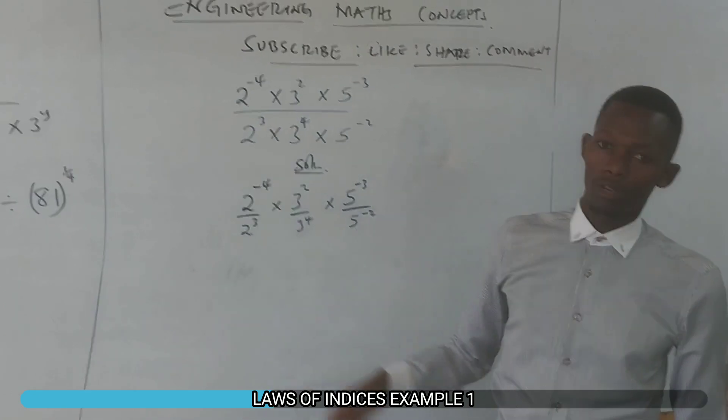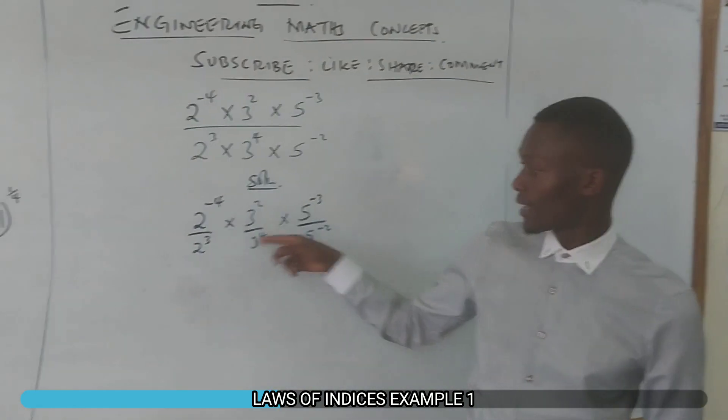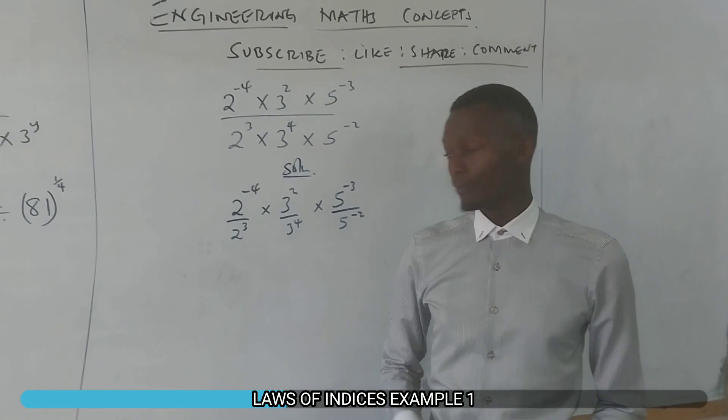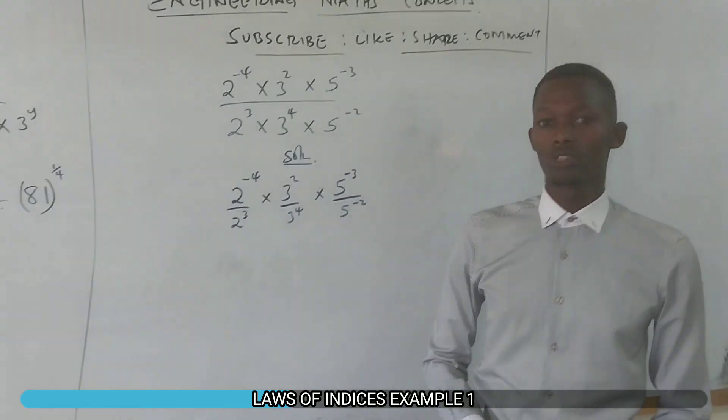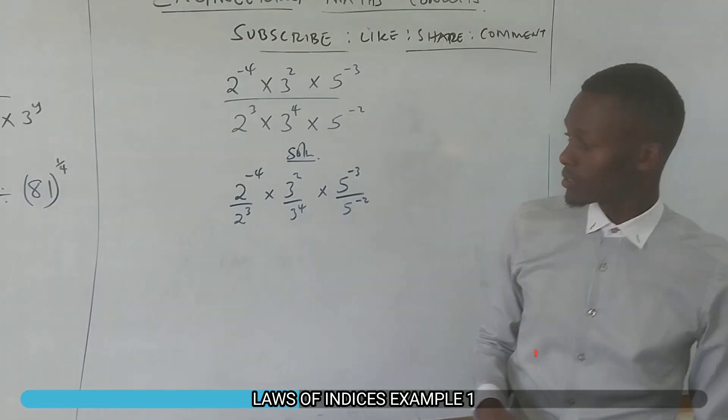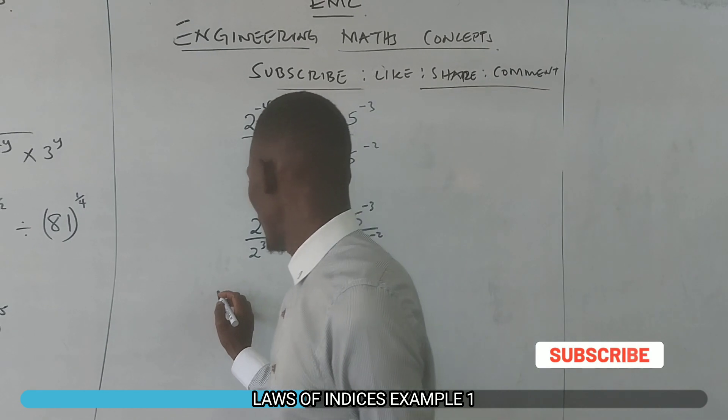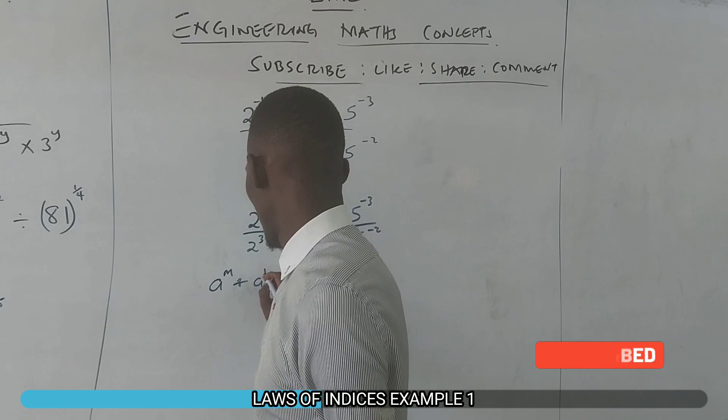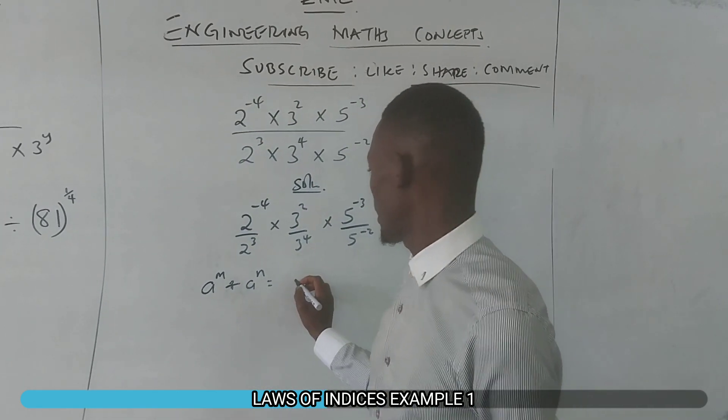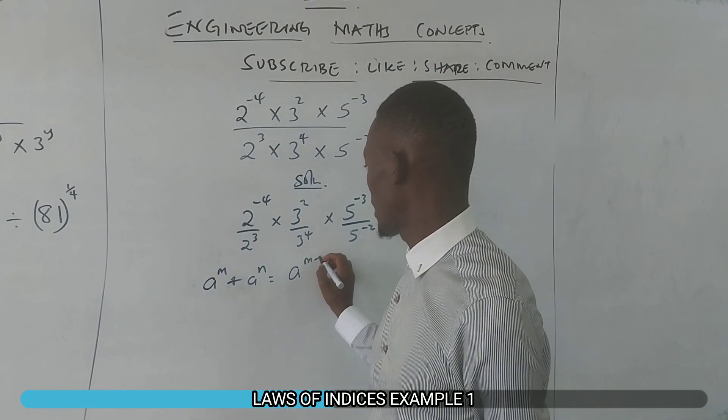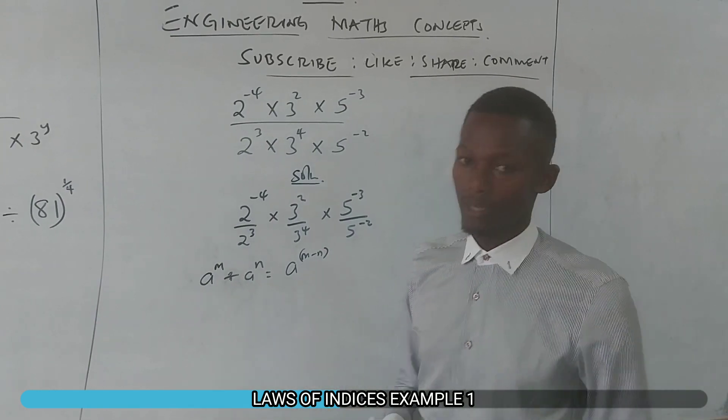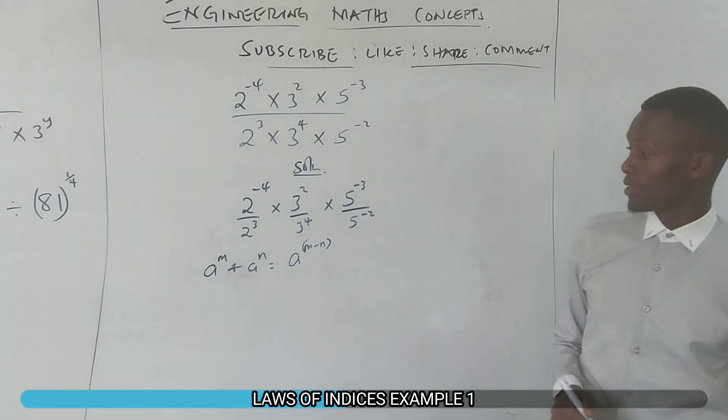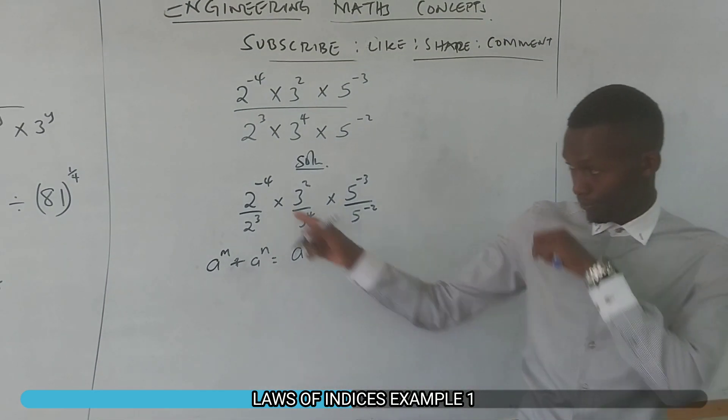Now you can use the laws of indices to evaluate these numbers because the bases are the same. We can apply the quotient rule, which states: if you have a^m divided by a^n, then this is a^(m-n) - you subtract the powers or indices.